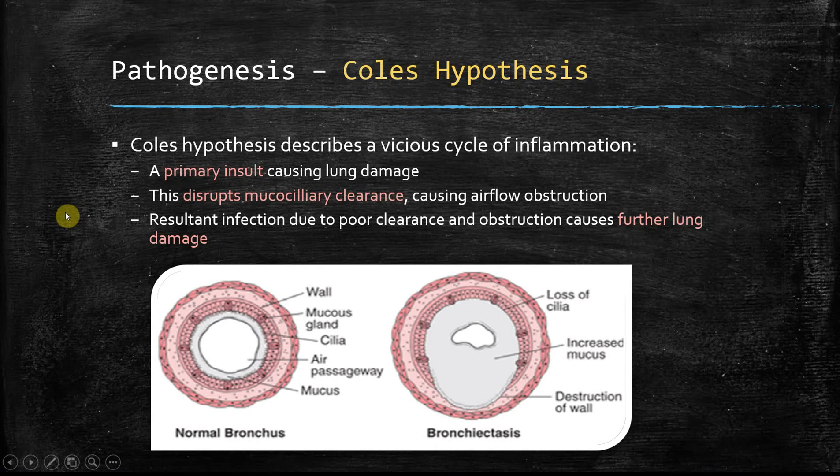Here is an image showing the changes you get in bronchiectasis. As you can see, there's loss of cilia, increased mucus, and destruction of the wall.